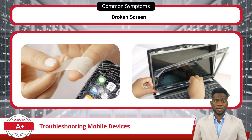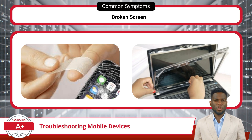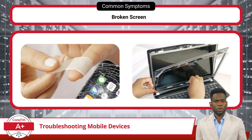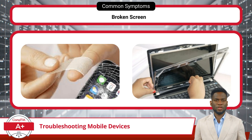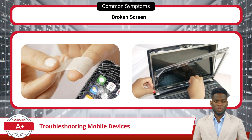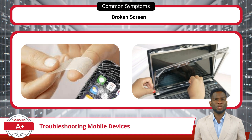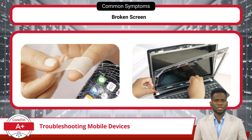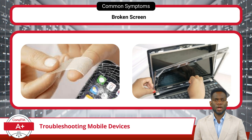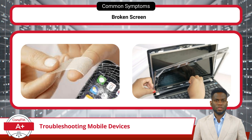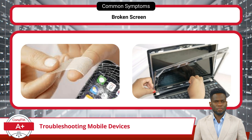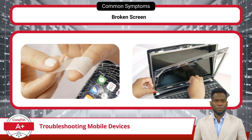A broken screen is a common issue that compromises both the functionality and aesthetics of a mobile device. When the screen is cracked or shattered, it obstructs visibility and poses potential safety risks. Users should consider replacing the screen to restore the device's usability and appearance. However, replacing the screen goes beyond visual restoration — it also entails ensuring that essential components such as the webcam, microphone, and wireless antennas, which are often built into or surround the screen, remain operational.